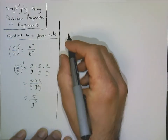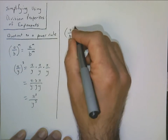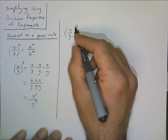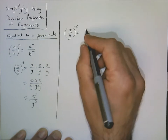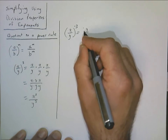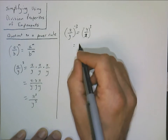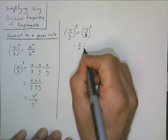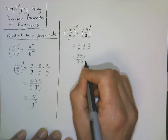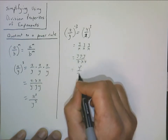This also works for negative exponents. Suppose we have x over y to the power of negative 3. The negative sign in the exponent tells us to take the reciprocal of the base, so this becomes y over x to the power of 3, which is y over x times y over x times y over x, or y cubed over x cubed.